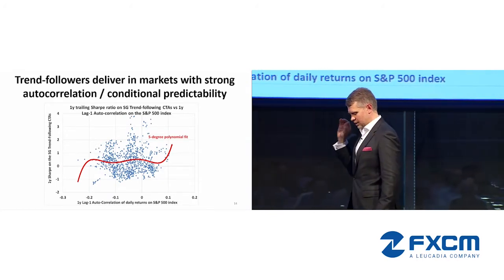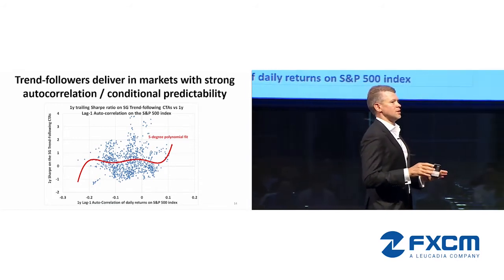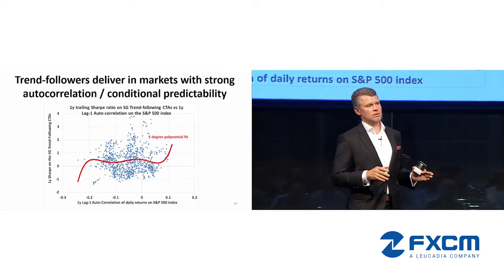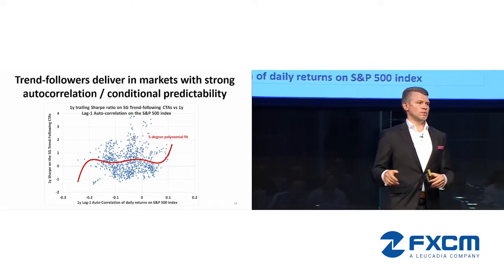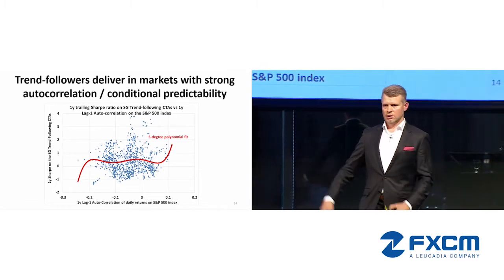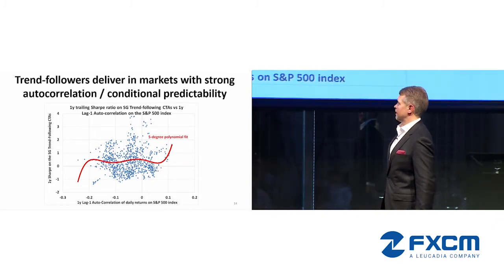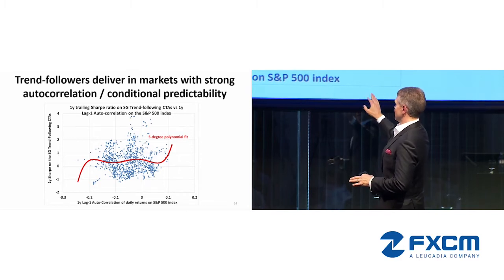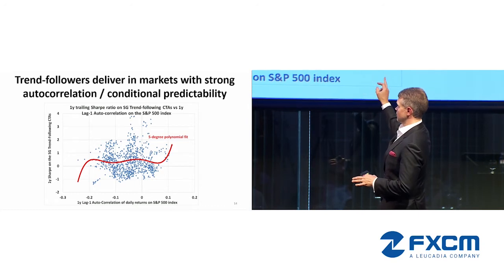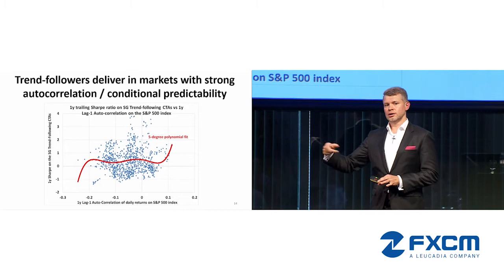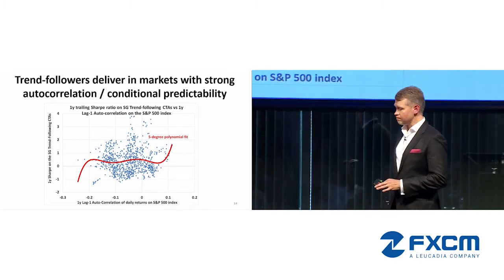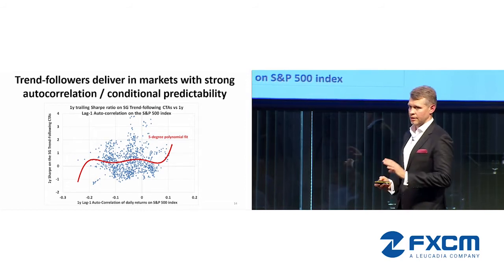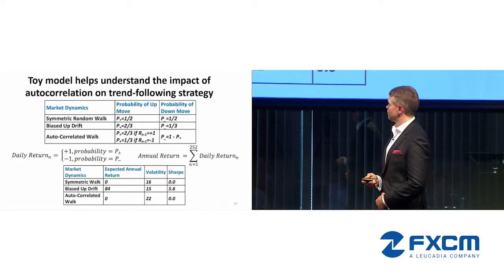In the risk profile, one key variable is autocorrelation. Using a simple measure of lag-1 autocorrelation between daily returns on an annual scale: trend following is expected to have very strong returns when autocorrelation is positive, meaning returns are conditionally predictable. Conversely, when returns are mean-reverting and autocorrelation is negative, trend following is expected to perform badly.